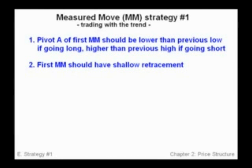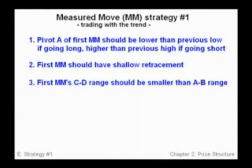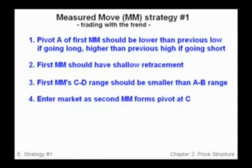Number two: the first measure move should have a shallow retracement. Number three: the first measure move's CD range should be smaller than the AB range. Number four: enter the market as the second measure move forms a pivot at C.